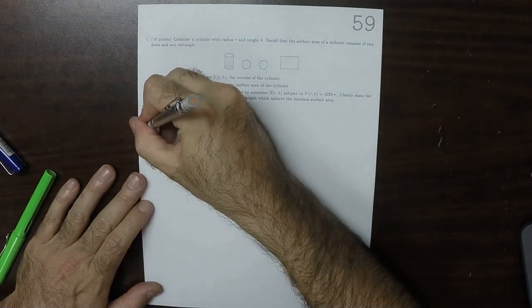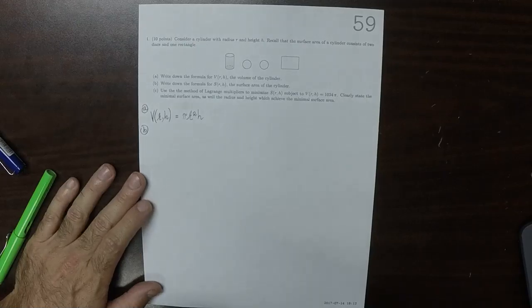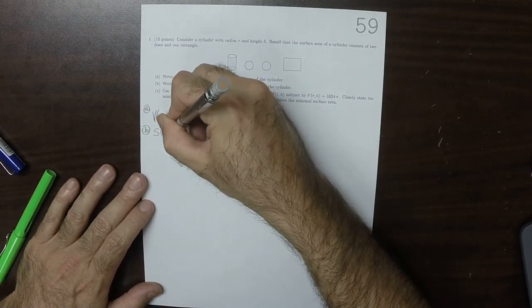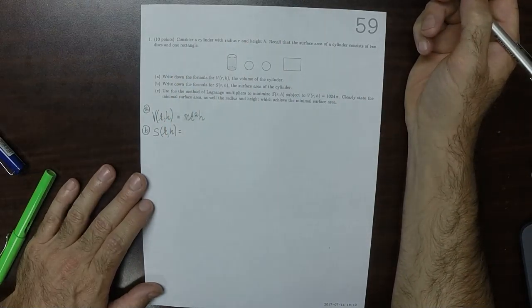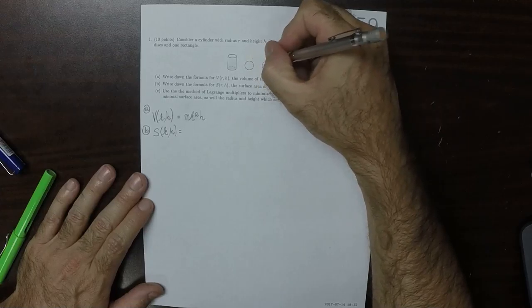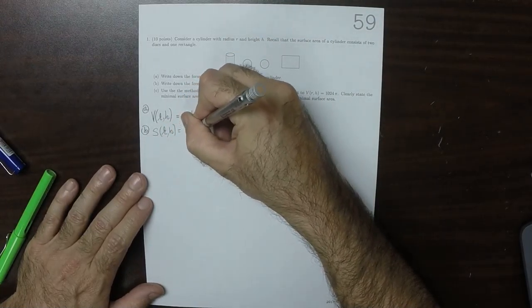Part B, the surface area of the cylinder as a function of r and h is, well, the two disks are easy enough, so that's pi r squared plus pi r squared.